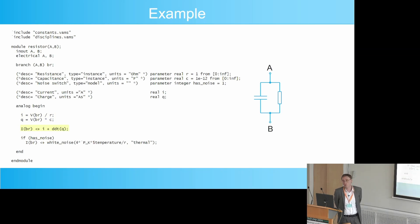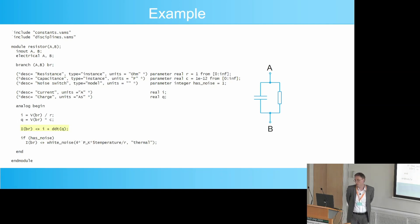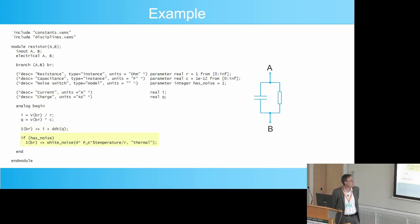In our case, we have two contributions. Resistor current is contributed to the branch, and the derivative with respect to time of the capacitor's charge is also contributed. Verilog A also enables us to model noise. In this case, we contribute some white noise to the branch which originates from the resistor.